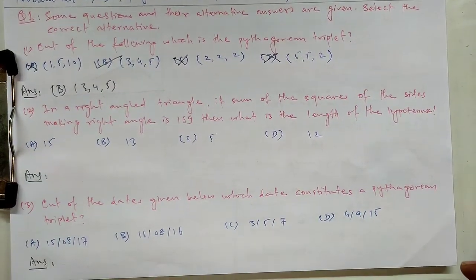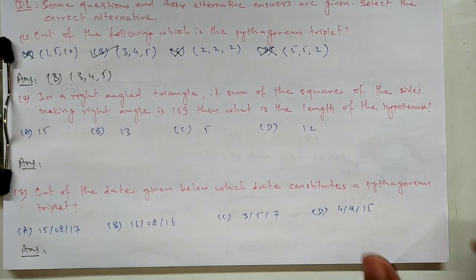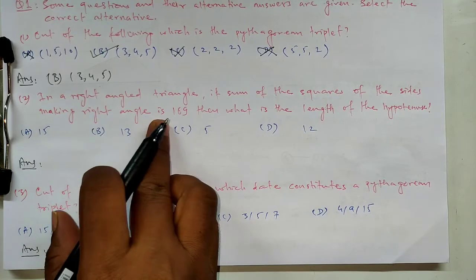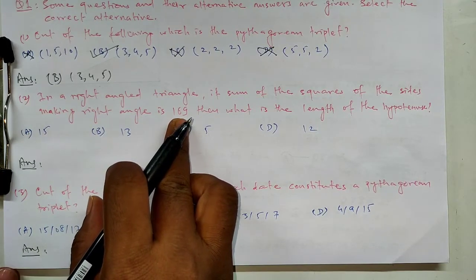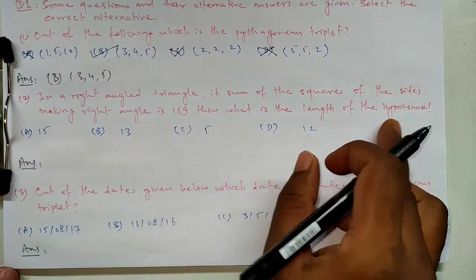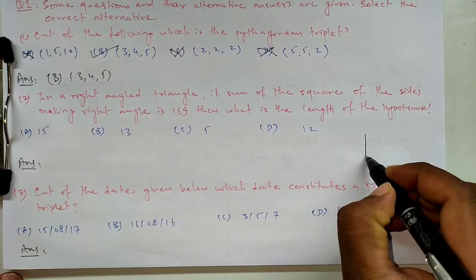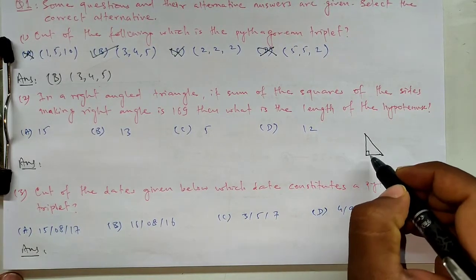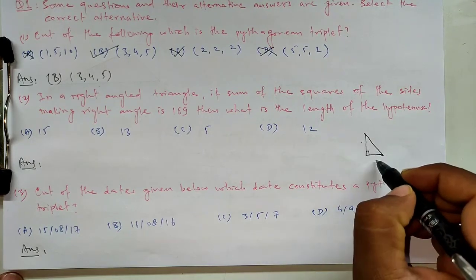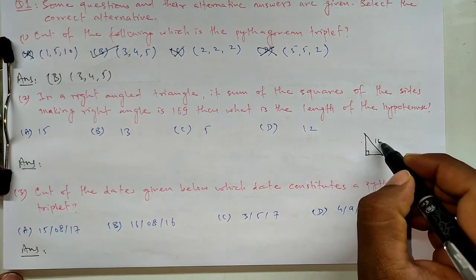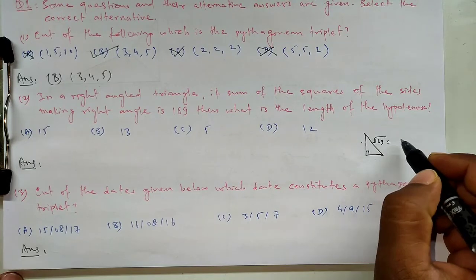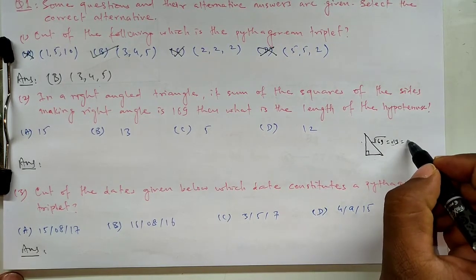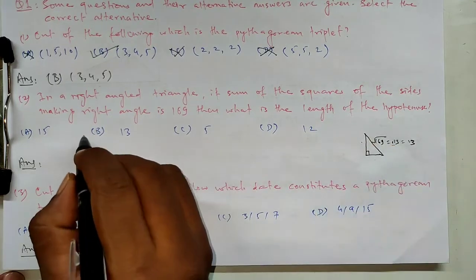Second question is, in a right angle triangle, if the sum of the square of the sides making the right angle is 169, then what is the length of the hypotenuse? 169 square root is 13. Plus minus 13, so B is the correct option, 13.